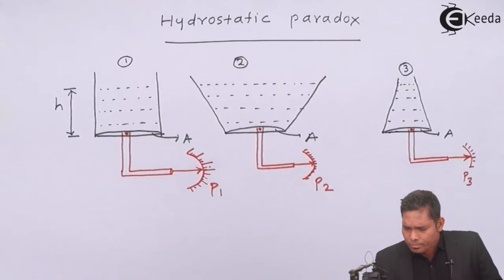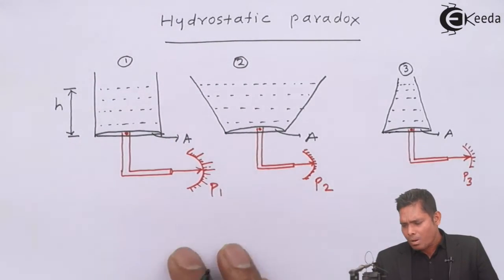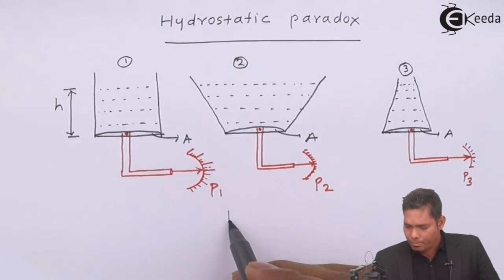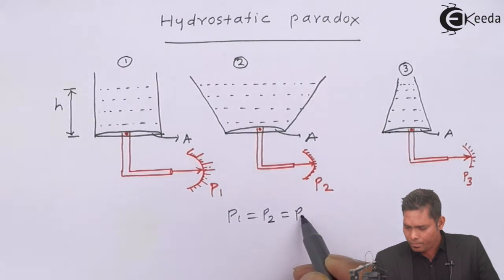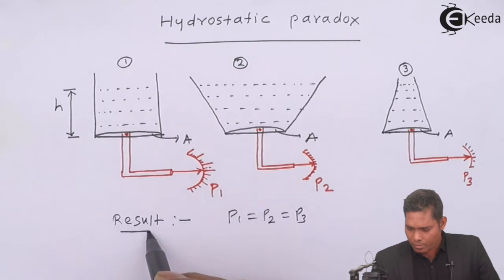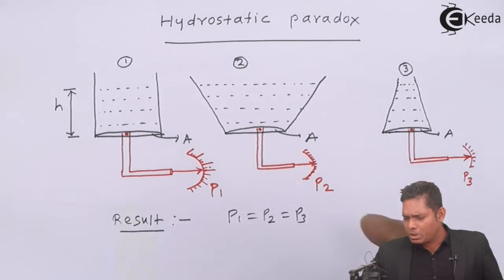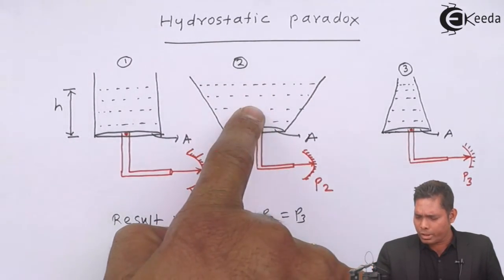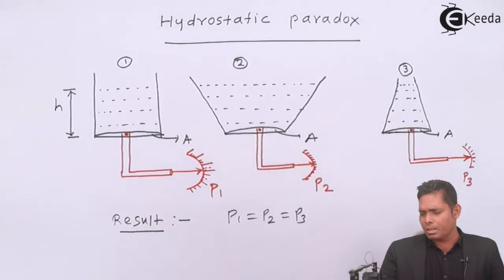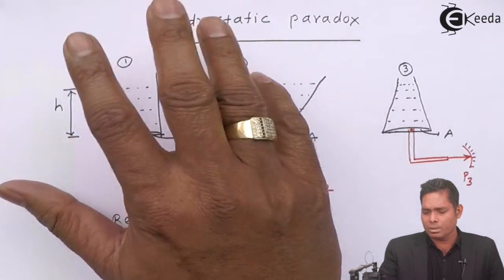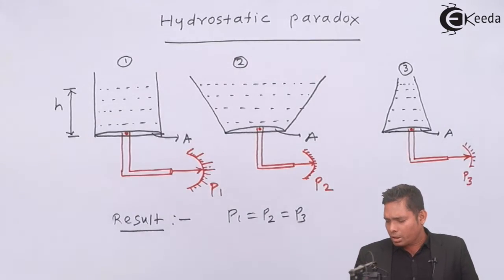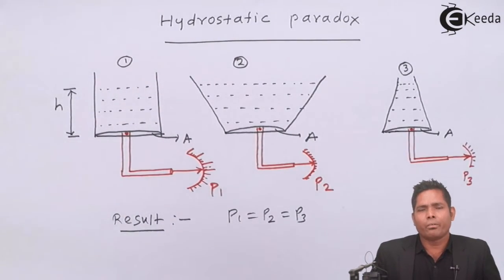So, here also in this case, it is observed that the pressure is the same. That is the concept of hydrostatic paradox — explained by Pascal. We will discuss why the pressure is same irrespective of the different amounts of water present in different vessels.